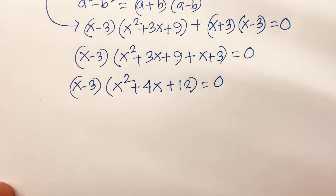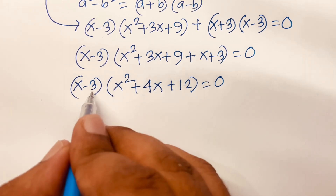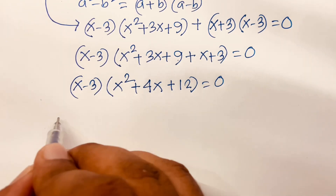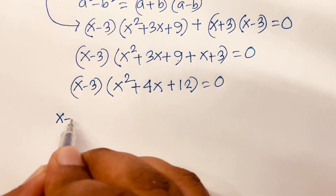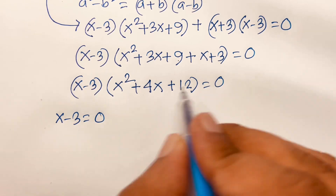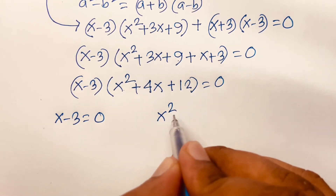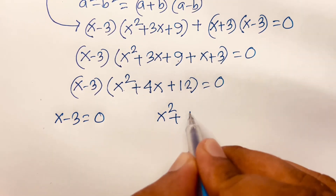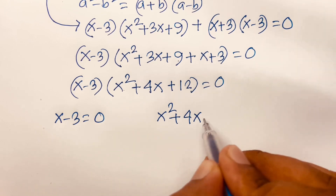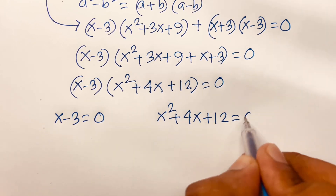There are two cases. The first case is x minus 3 equals 0, and the second case is x squared plus 4x plus 12 equals 0.